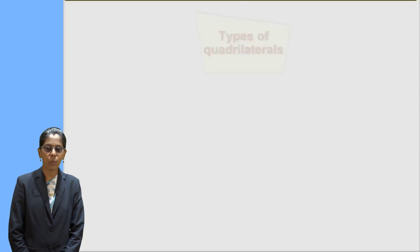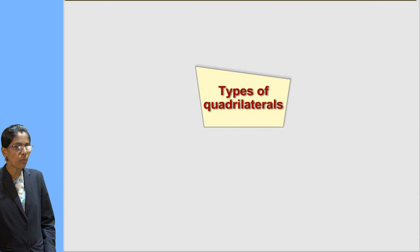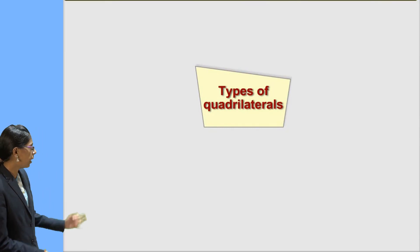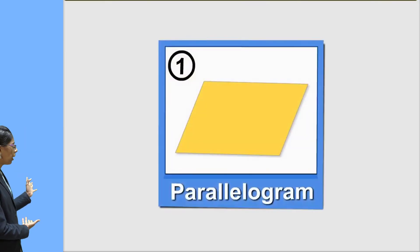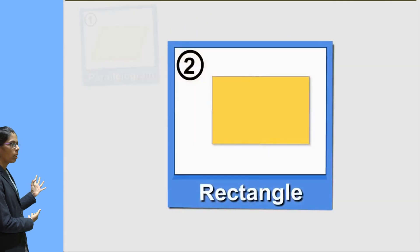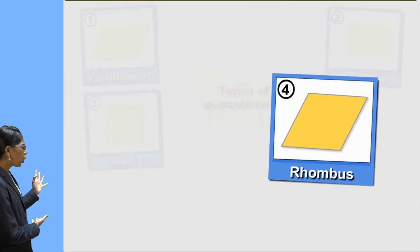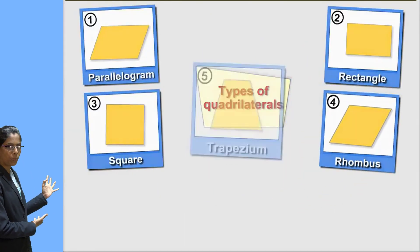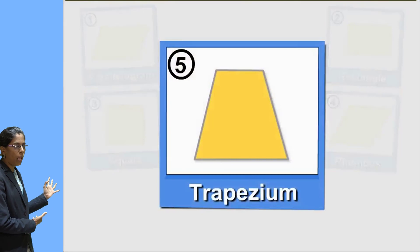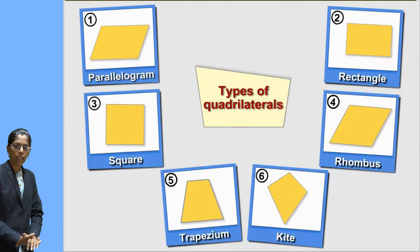First point: types of quadrilaterals. There are different types of quadrilaterals. The first type is parallelogram, second square, third rectangle, fourth rhombus, fifth trapezium, and the last one is kite. These are the types of a quadrilateral.